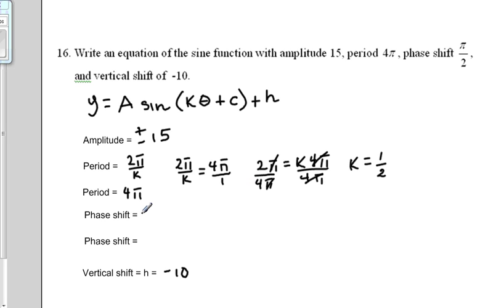Now, the phase shift, the formula for that is negative c over k. We are told that the phase shift is π over 2. Once again, we are going to set these two values equal to each other. However, we just found the value of k to be 1 half. So we are going to take that and plug it in here when we set these two equations equal to each other.